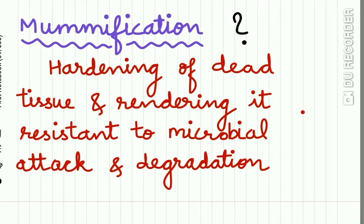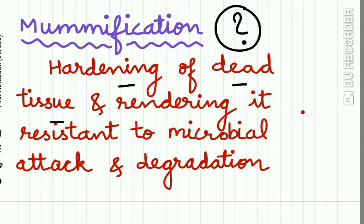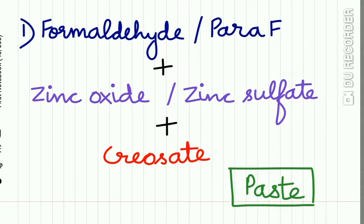What is mummification? Mummification is hardening of dead tissue and rendering it resistant to microbial attack and degradation — similar to Egyptian mummies. These mummifying agents are not used in recent days, but were commonly used in the past.